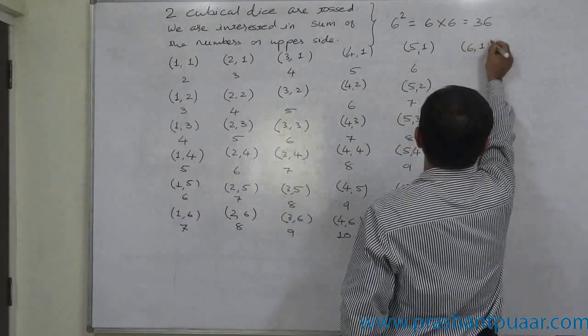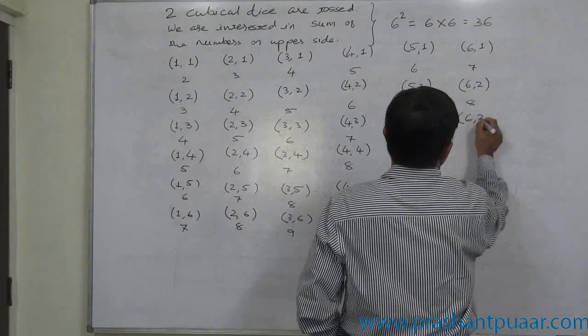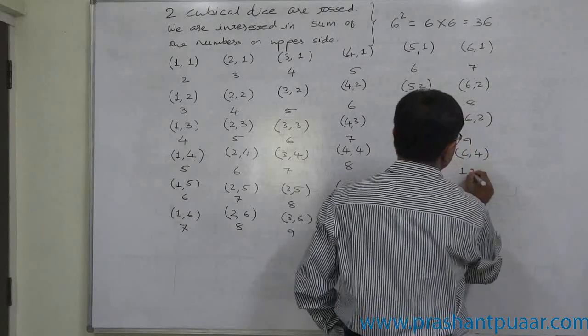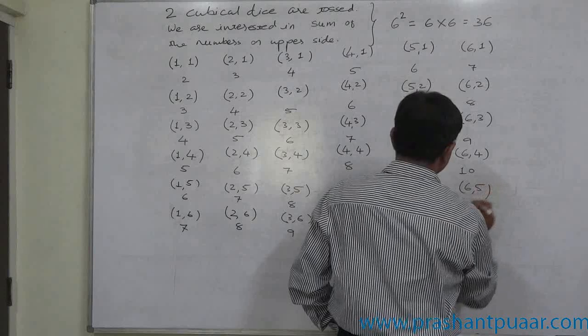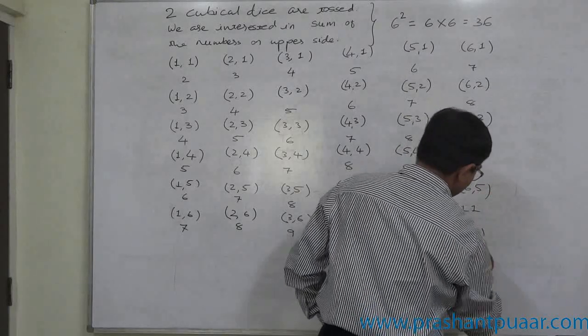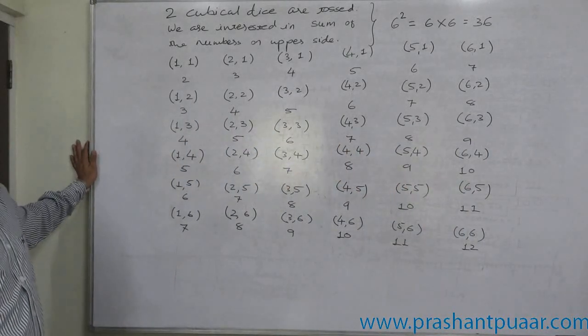And the last column: six, one: seven. Six, two: eight. Six, three: nine. Six, four: ten. Six, five: eleven. And six, six: twelve. This is the list of all possible 36 outcomes.